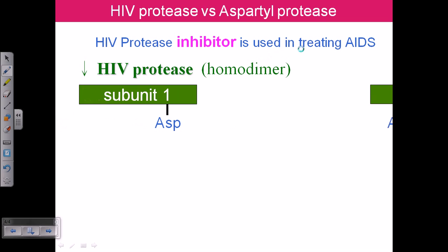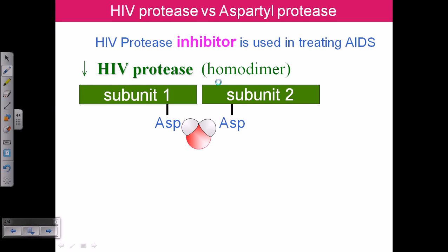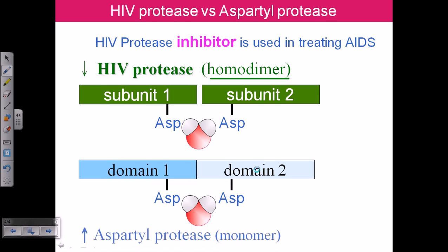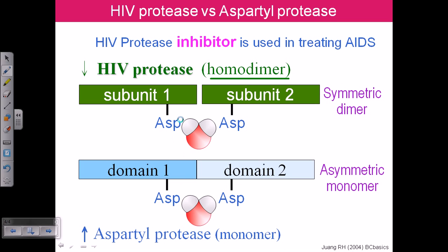HIV protease inhibitors are used to treat HIV/AIDS. The HIV protease is a homodimer structure, which can be either symmetric or asymmetric. It is called an aspartyl protease because for its protease activity it requires the presence of two aspartic acid residues in symmetric or asymmetric positions. If we add a protease inhibitor that resembles the substrate binding region, it blocks the activity of this protease. As a result, HIV reproduction may be halted and we can treat AIDS to some extent. These are the practical approaches that we can use by understanding competitive inhibition of enzymes.